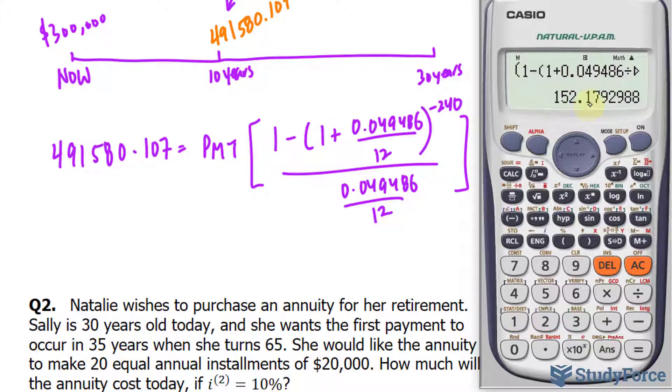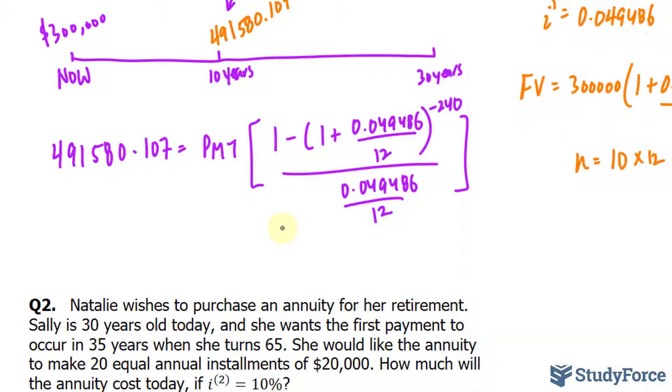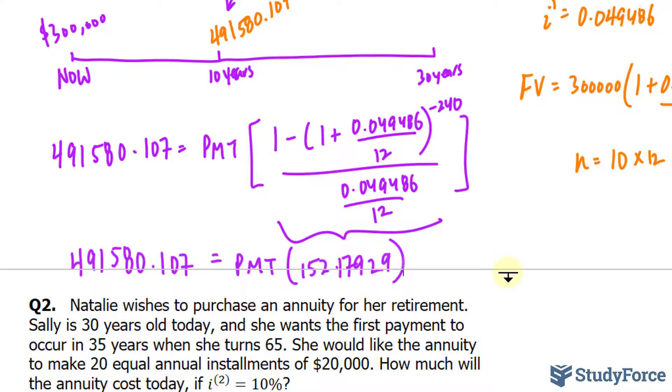So, 152.179, et cetera, is all of that. Let me write that down for you. Now, at this stage.